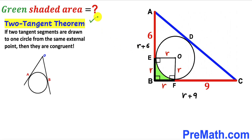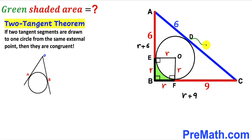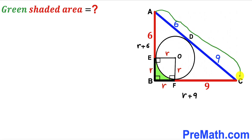Now let's recall the two tangents theorem: if two tangent segments are drawn to one circle from the same external point, they are congruent. Applying this here, segment AD equals segment AE, which is 6, so AD is 6 as well. Similarly, segment CD equals segment FC, which is 9, so CD is 9. Therefore, the whole hypotenuse AC has length 6 plus 9, which is 15 units.